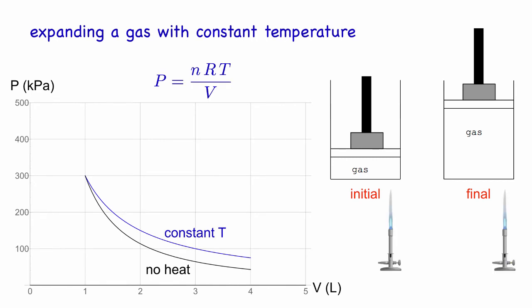We could add some heat as the gas is expanding, and if we were careful, we could adjust the heat and pressure so that the gas stays at a constant temperature. Then the ideal gas law tells us that the pressure curve goes like 1 over the volume.